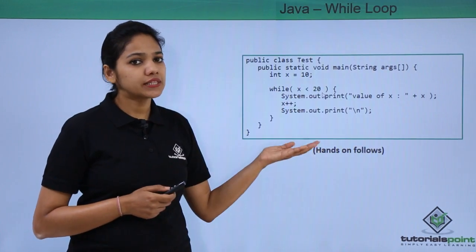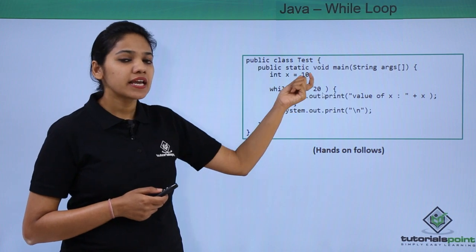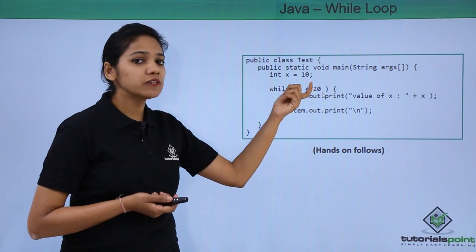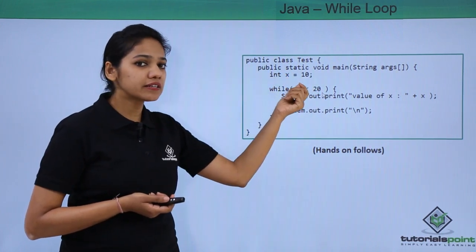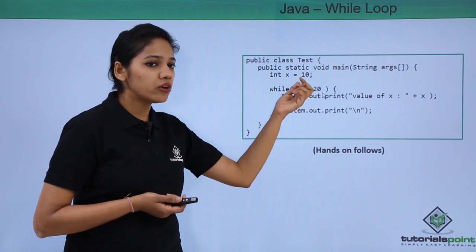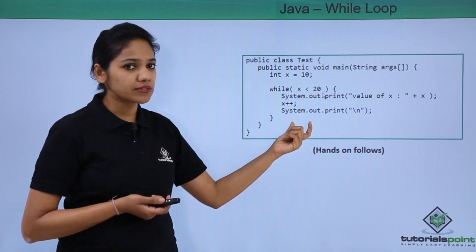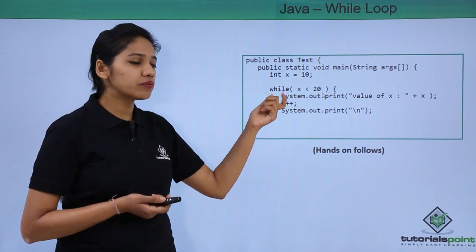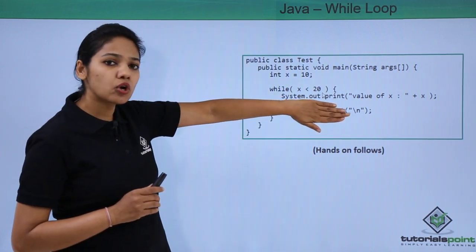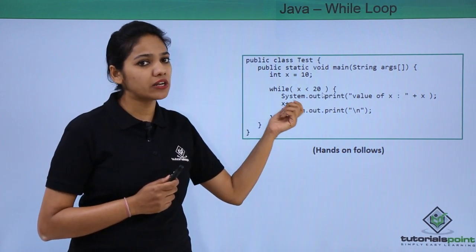Let us understand with an example. We have created a class 'test' with an integer variable x holding the value 10. We write the 'while' keyword, then the boolean expression in brackets — checking if x is less than 20. If true, execute the block of statements. Inside the block we write System.out.println to print the value of x. However, we haven't incremented the value of x yet.